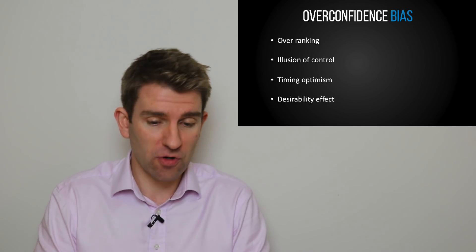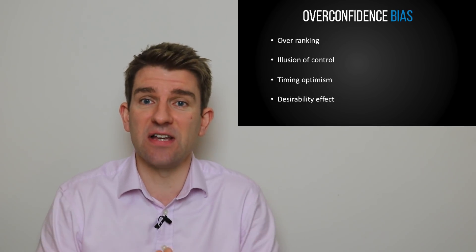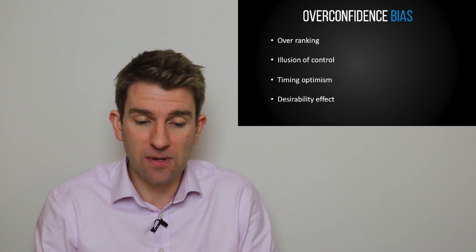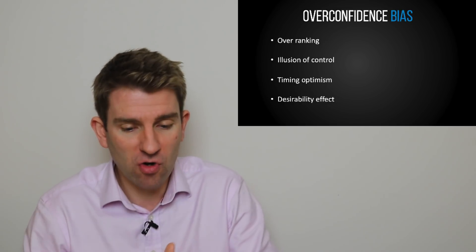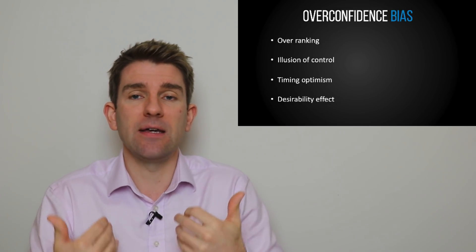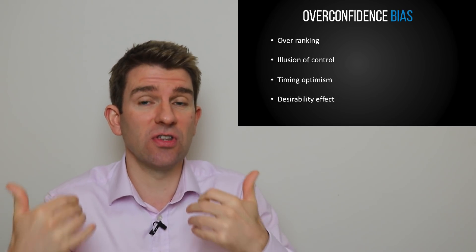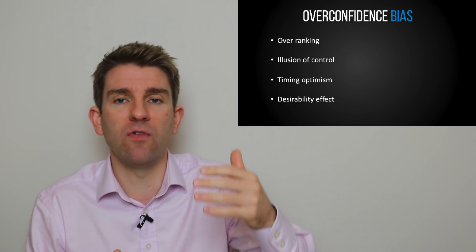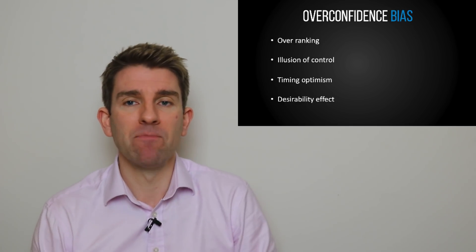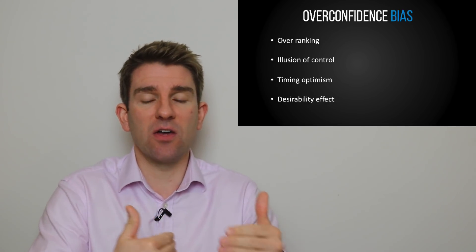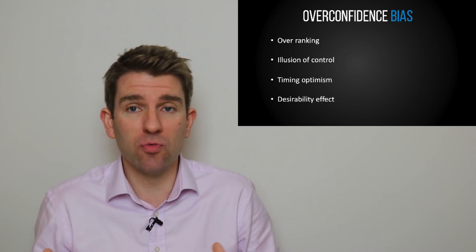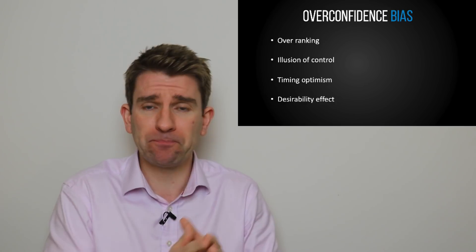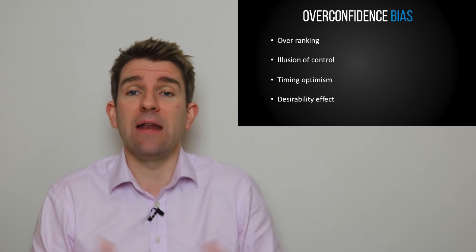So number two is illusion of control. So this is pretty much as it says, it's a bias that says we think we've got control over a situation when in fact we don't. Average people believe they have more control than they do, which leads people to make worse decisions or riskier decisions than they think they have. Because if you think you've got control of something, markets is a great example. If you think you've got control over your trade and how much you're going to make, you might then take more risky trades thinking, well, I've got control of this. Well, in fact, you don't. You can control the risk you make within reason depending on the type of trade you're making, but you can't control where the market's going to go.